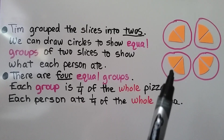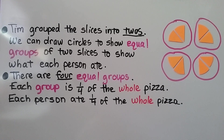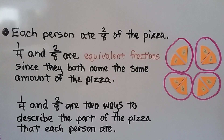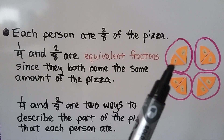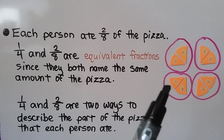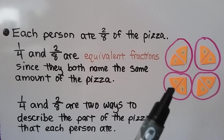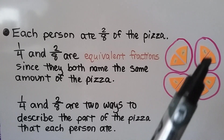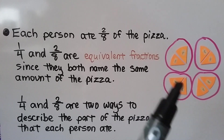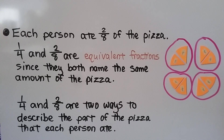They each got two slices, which is one-fourth of the entire pizza. And each person ate two-eighths of the pizza. Looking at all eight pieces, one person ate two of them — we could say they ate two-eighths of the entire pizza. If we put them into groups of two, we can say they ate one-fourth of the pizza. So one-fourth and two-eighths are equivalent fractions since they both name the same amount of pizza. One-fourth and two-eighths are two ways to describe the part of the pizza that each person ate.